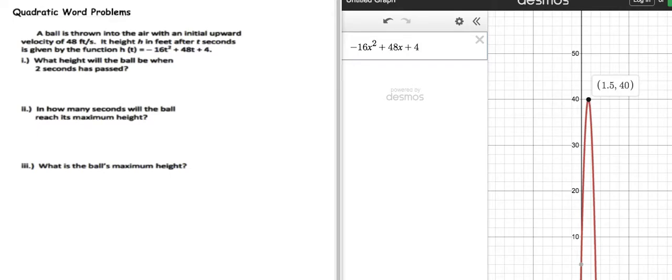Okay, so this is a quadratic word problem, and it's called a projectile. You probably saw them in math one. And it says, a ball is thrown into the air with an initial upward velocity of 48 feet per second. Its height, h, in feet after t seconds is given by the function h of t is equal to negative 16t squared plus 48t plus 4.